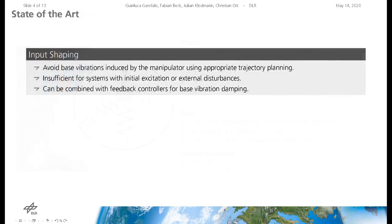In the following, four state-of-the-art methods to control flexible base manipulators are presented. The input shaping method avoids base vibrations induced by the manipulator using appropriate trajectory planning. This is insufficient for systems with initial excitation or external disturbances. Therefore, input shaping is typically combined with feedback controllers for additional base vibration damping.